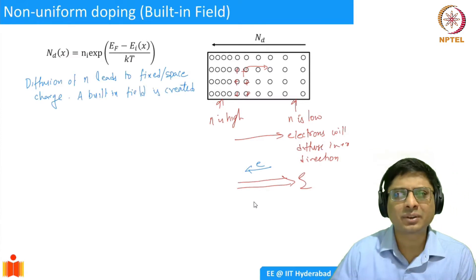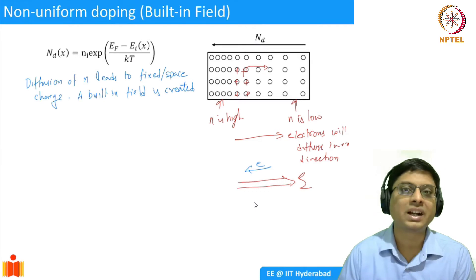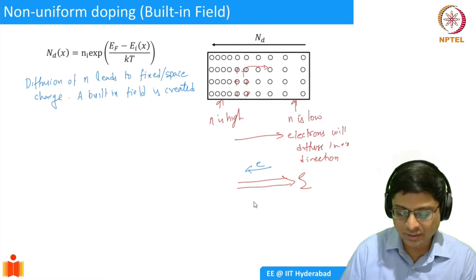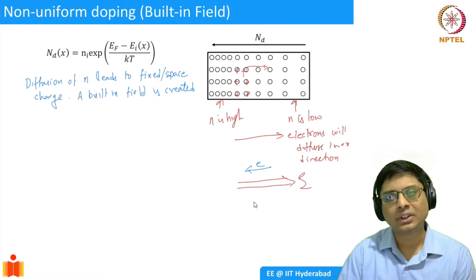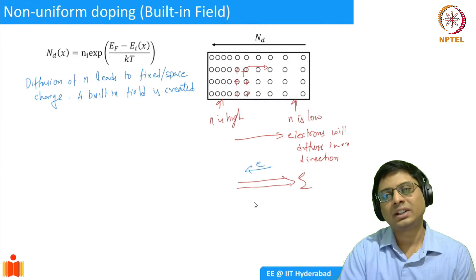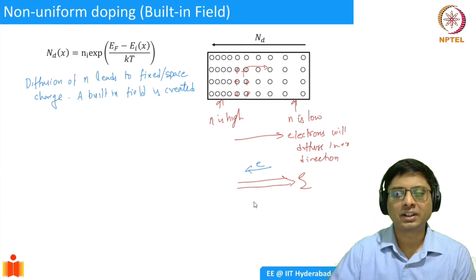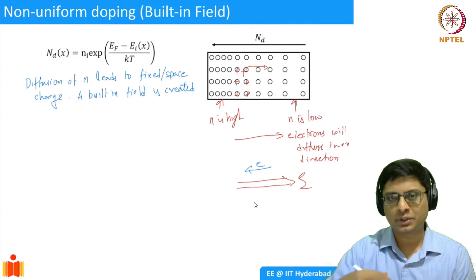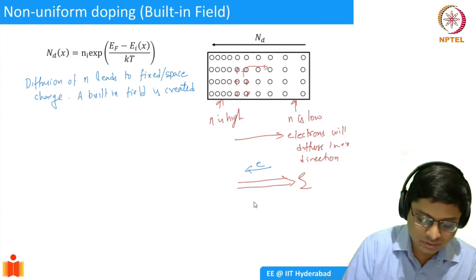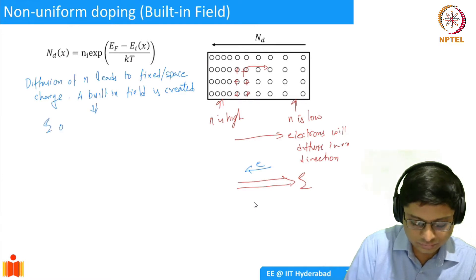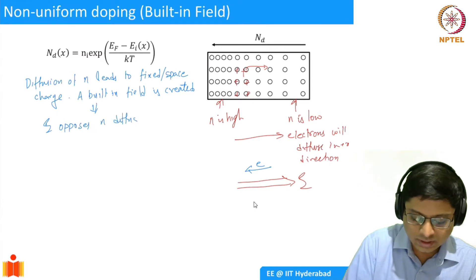It's a built-in field because it actually comes from the dopant distribution in the lattice. Initially there will be a large concentration gradient creating diffusion current, but at some point the built-in field opposes the diffusion process and then equilibrium is reached. So E opposes electron diffusion, which implies equilibrium is reached.